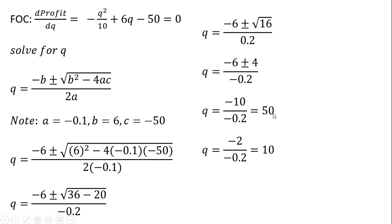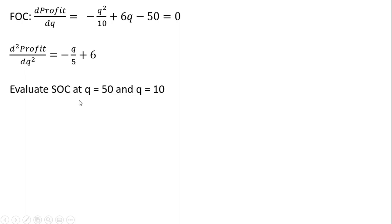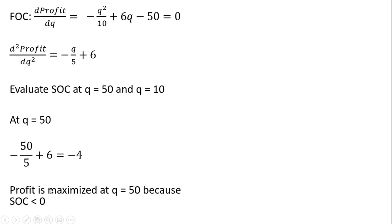So we have two answers: Q equals 50 and Q equals 10. Which one is the maximum? Which one is the minimum? We're going to need to check the second order condition. We take the derivative of the first order condition equation and get back a result — 2 divided by 10 is just 1 over 5. Evaluating at Q equals 50, the second order condition is negative. When the second order condition is negative and the first order condition is 0, profit is maximized. So profit is maximized at Q equals 50.